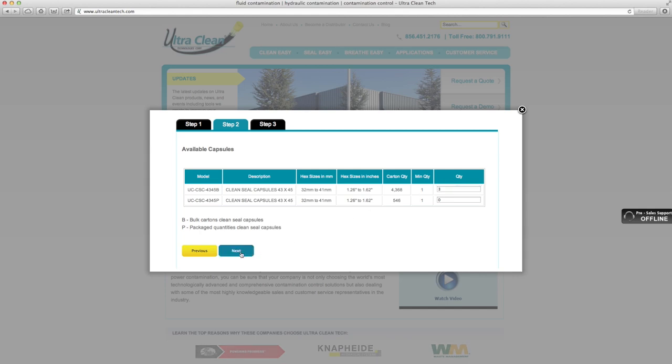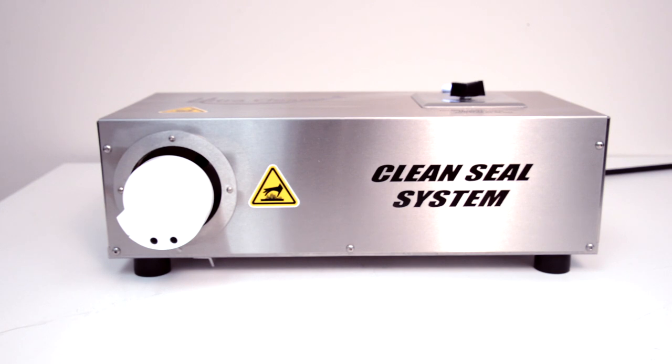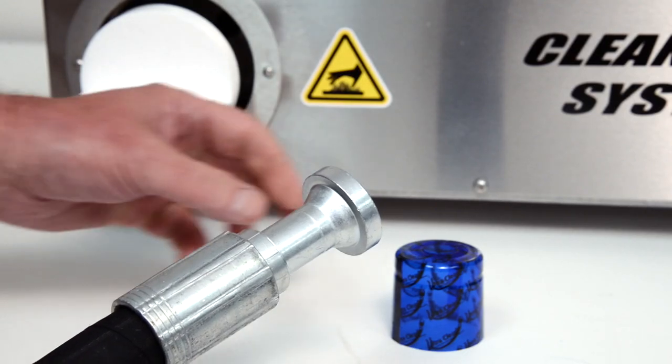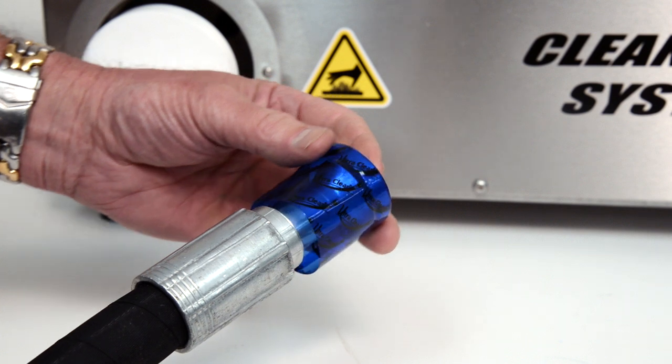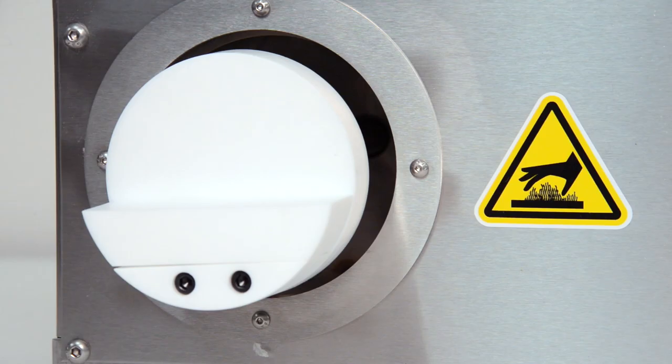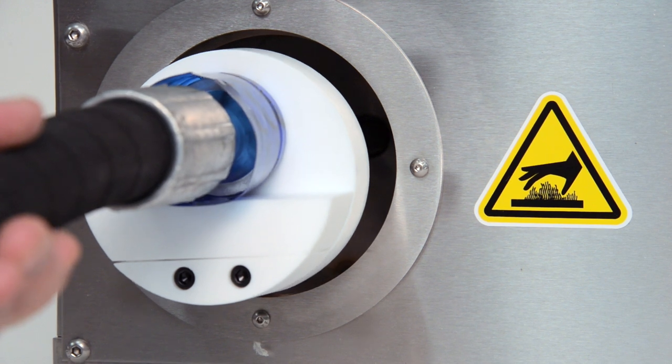CleanSeal capsule application is both fast and easy. The machine will need a few minutes to reach the correct temperature from a cold start. Slide the correct size CleanSeal capsule over the end fitting. Place the CleanSeal capsule against the white plunger and push in.